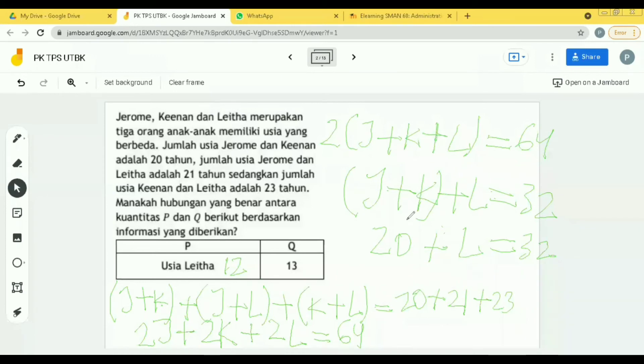Itu yang J plus K plus L sama dengan 32 tadi tahapannya gimana? Oke, good. Jadi gini, sampai tahapan ini, yang atasnya dulu, Hana ya? Sampai tahapan atas ini kamu bingung enggak? Dapat 2 buka kurung J plus K plus L tutup kurung sama dengan 64. Bingung enggak sampai sini? Enggak. Enggak bingung ya? Terus dari atas ini ke bawah, gimana kok jadi 32?